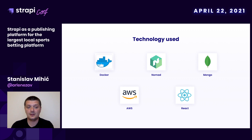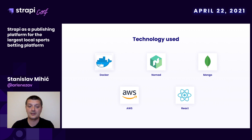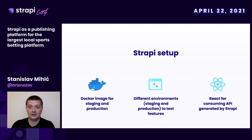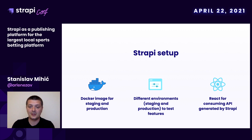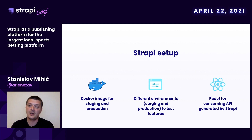The technology we are using: official Strapi Docker image, Nomad for handling deployment, MongoDB for our backend database, AWS for hosting, and React for the client side. Our Strapi setup is very straightforward. We use the official Strapi Docker image for staging and production. We like to have different environments — especially staging — where we can test and introduce new features regarding the blog or other Strapi-generated content. React is responsible for consuming the API generated by Strapi.